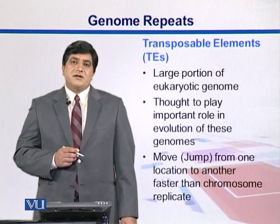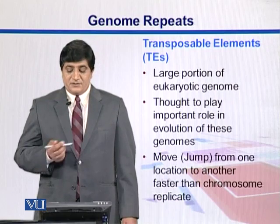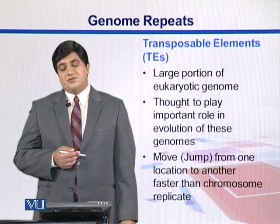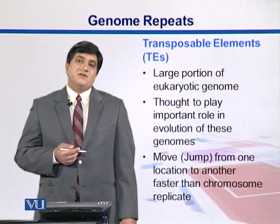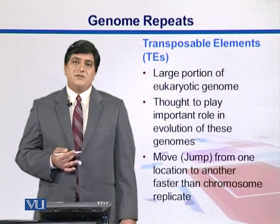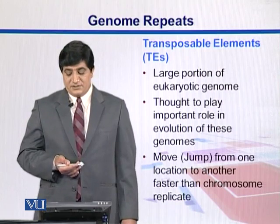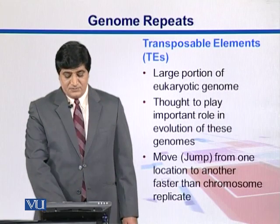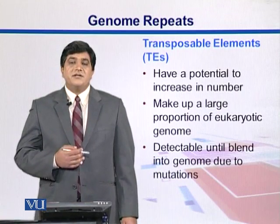Transposable elements are also important components — an important kind of repeat. They make up a large proportion of the eukaryotic genome and are thought to play important roles in genome evolution. These transposable elements transpose from one position to another in the genome and are also called jumping genes. They have the potential to increase in number.